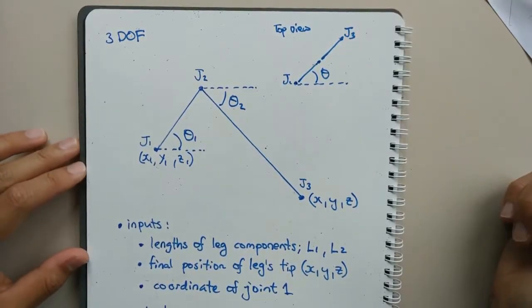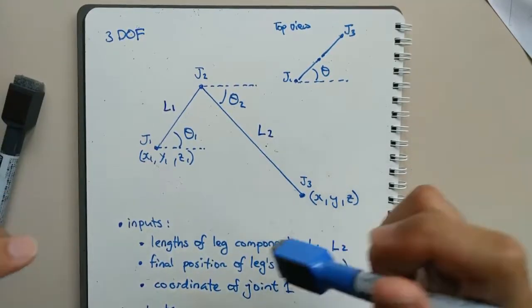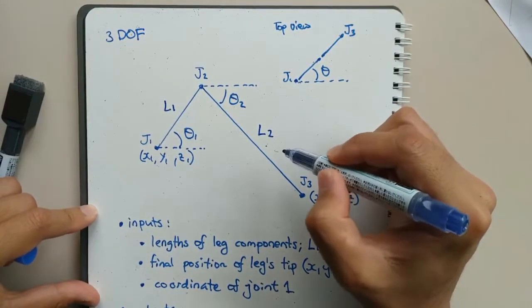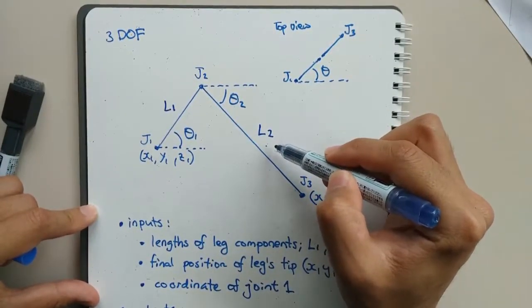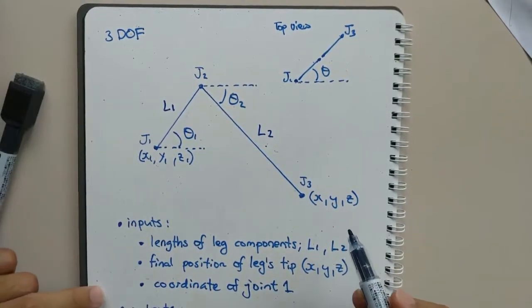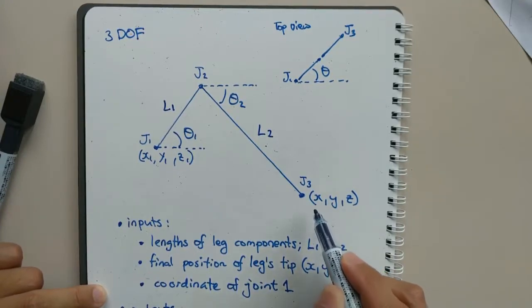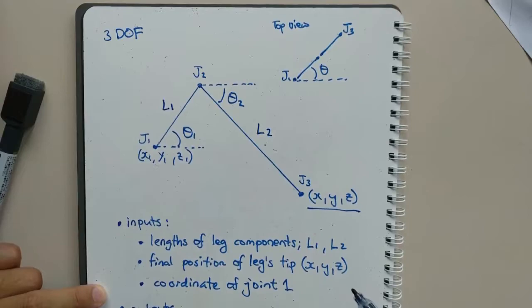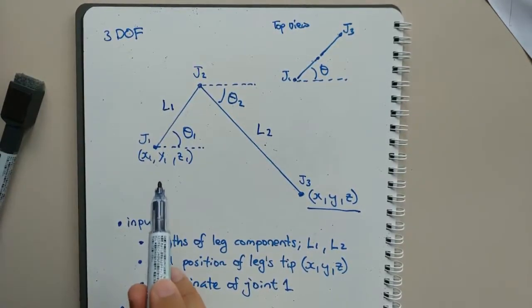To find the angles, we have four inputs. Two of them are the lengths of the leg components, L1 and L2, which are constants. The third input is the final coordinate of the leg tip in three-dimensional space. And the fourth one is the coordinate at joint 1, or the root of the leg.